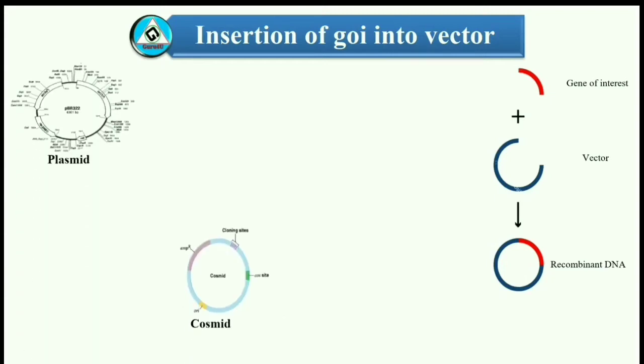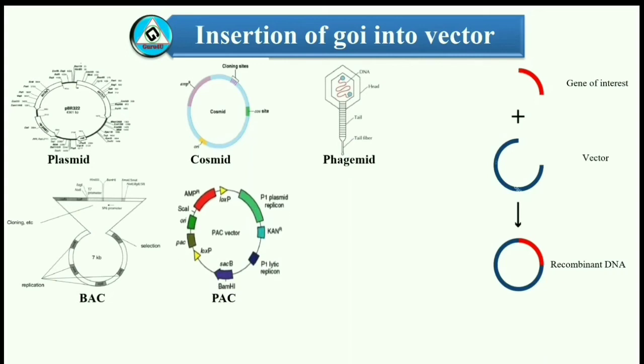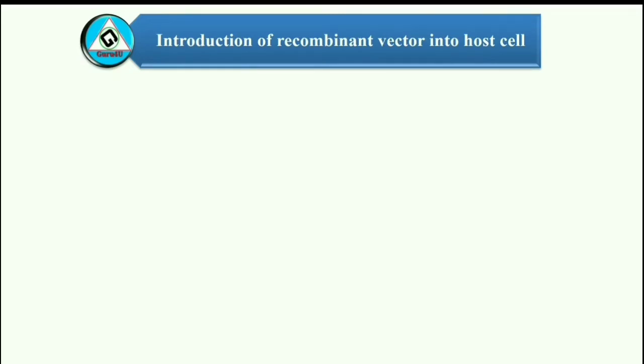There are different types of vectors which can be used as per the requirement, like plasmid, cosmid, phagemid, BAC, PAC, YAC, etc. Once the gene is constructed, it must be stably integrated into the target organism's genome or exist as extra-chromosomal DNA.